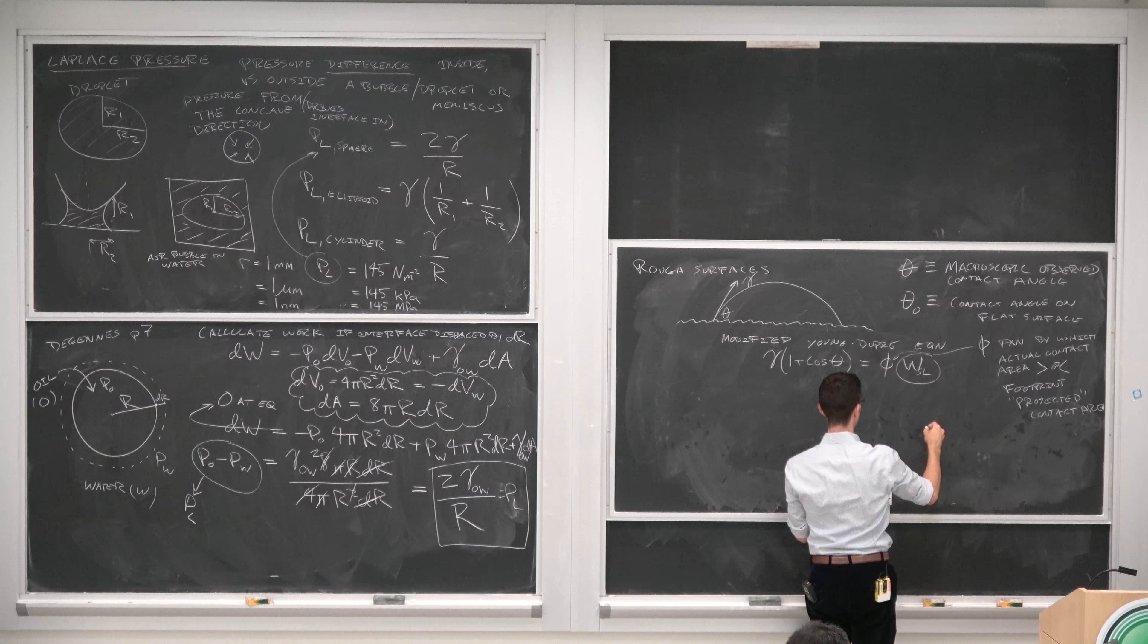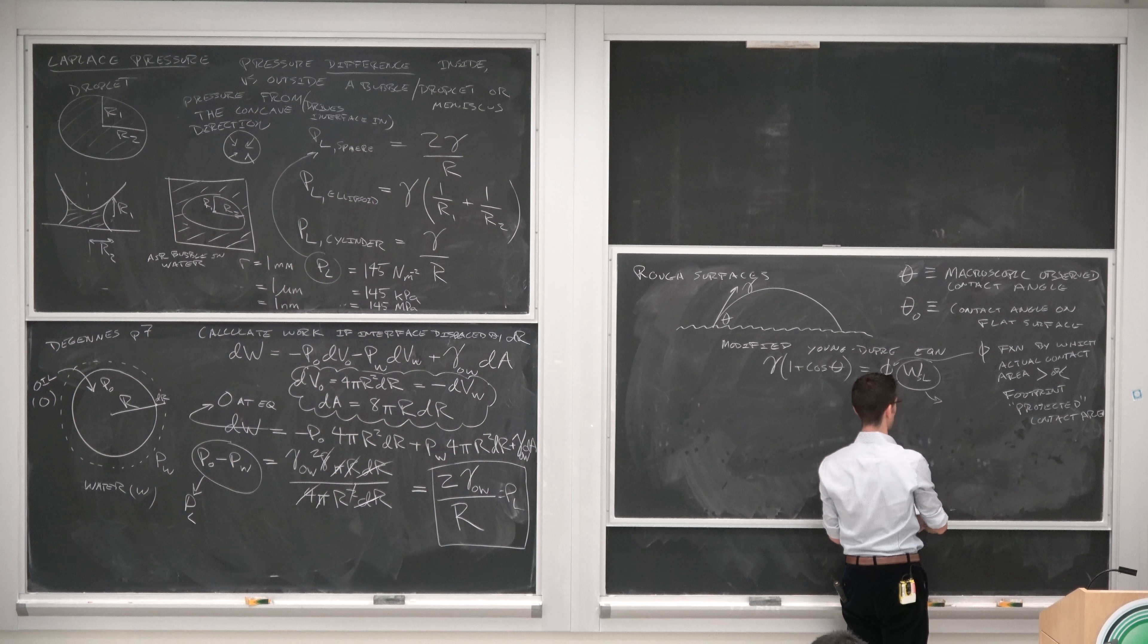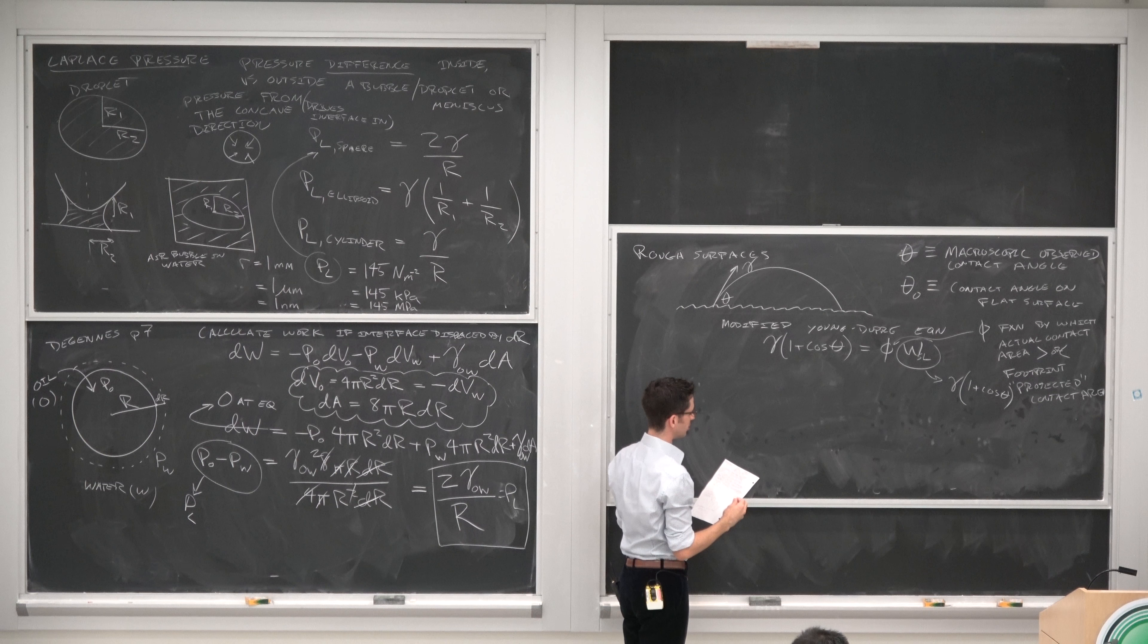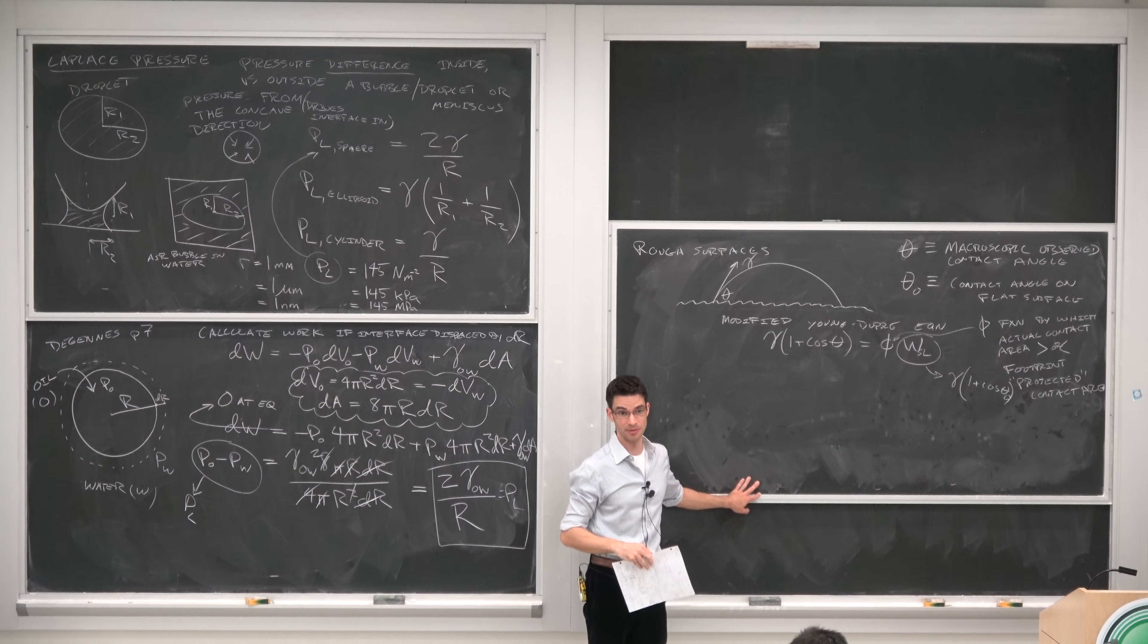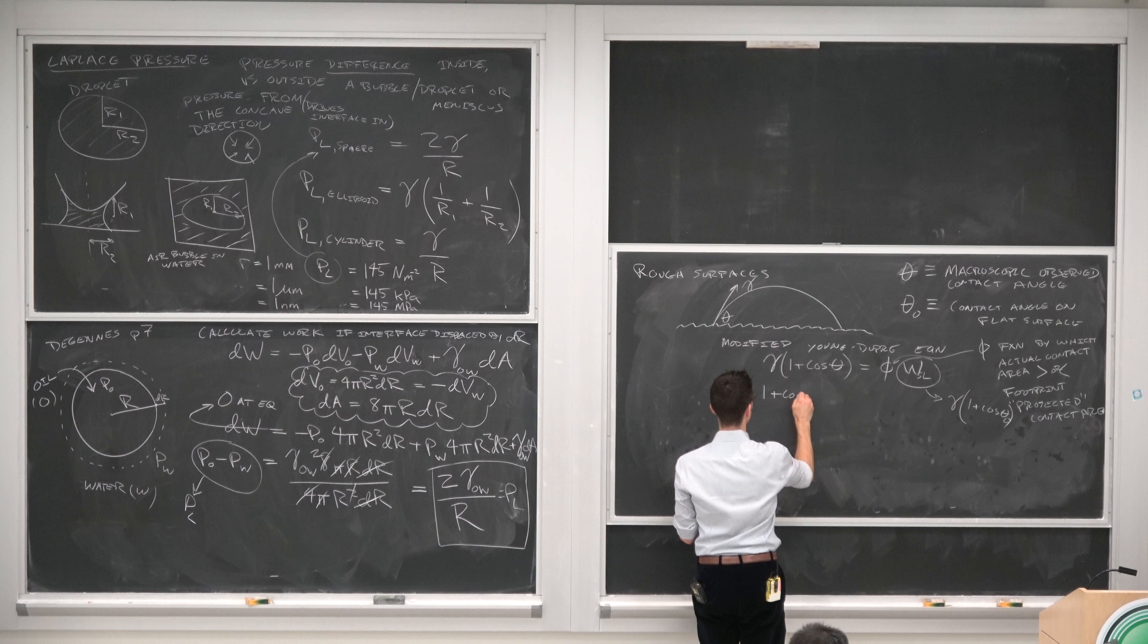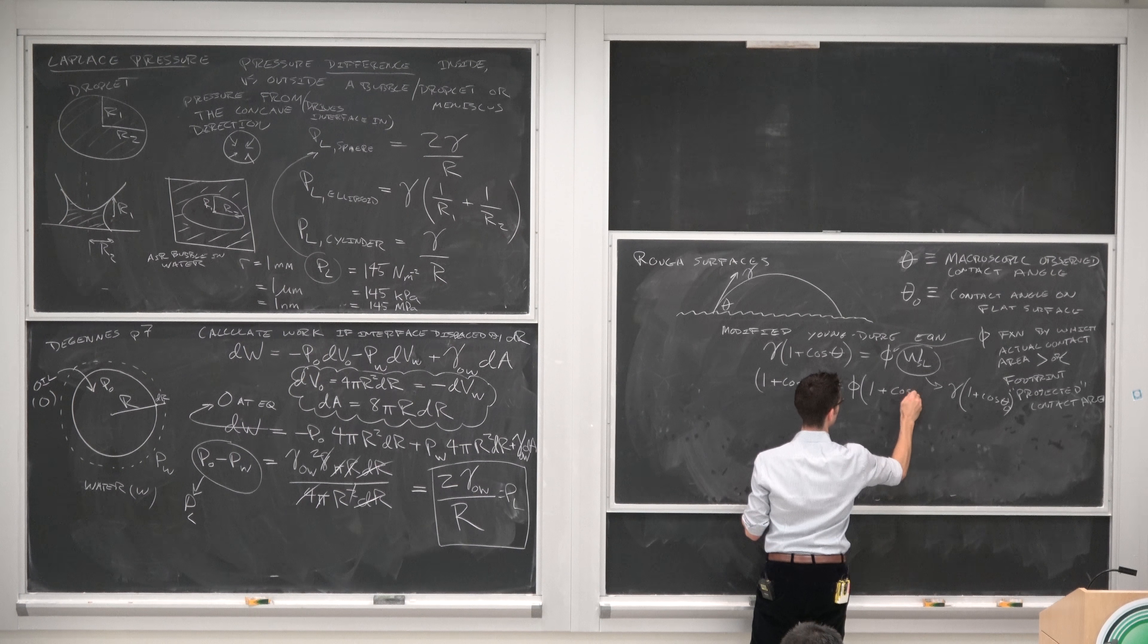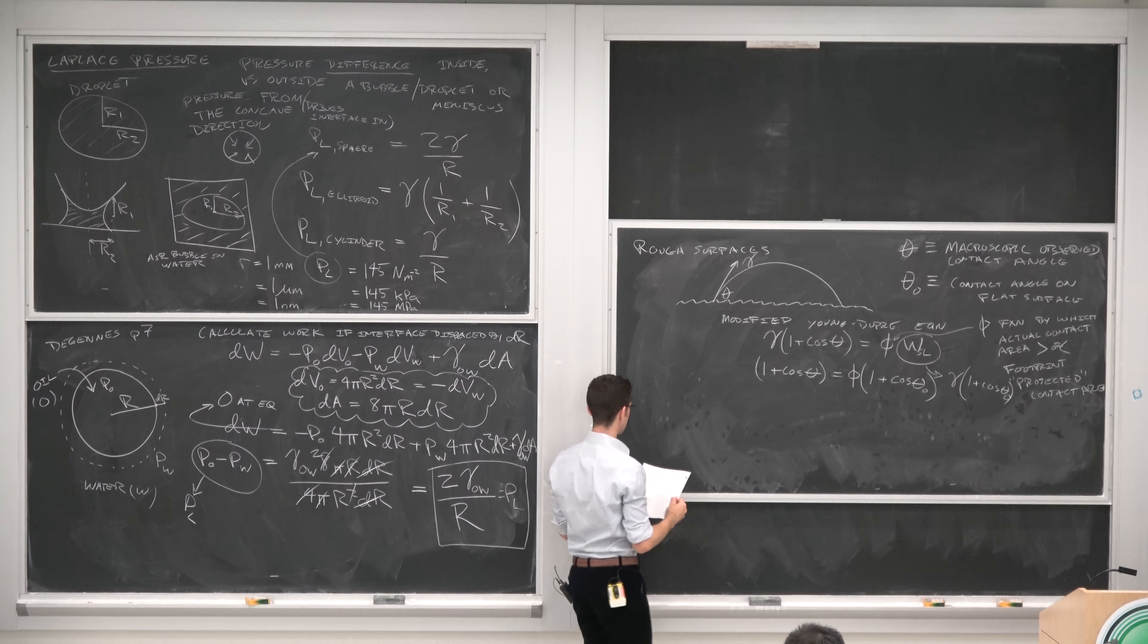So it's the fraction by which the contact area is greater than or less than the projected contact area. Now the work of adhesion by Young's equation, or by the Young-Dupre equation, is equal to gamma 1 plus cosine theta on a flat surface from previously in the class when we were only considering idealized flat surfaces. So we can rewrite this as 1 plus cosine theta equals phi times 1 plus cosine theta naught.